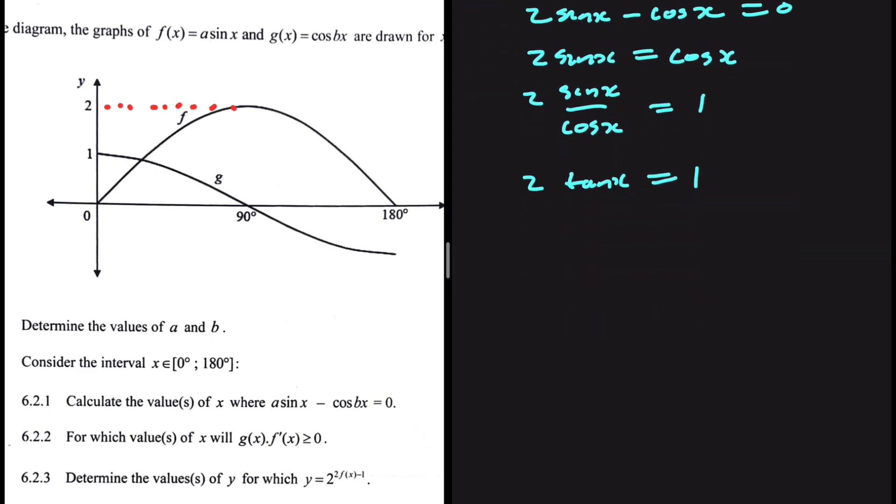You can see here that we're going somewhere. Tan x will equal 1 divided by 2. So we can say that x equals tan inverse of 1 divided by 2. The value of x is 26.57. And just like that, we've answered 6.2.1. Just a bit of algebraic manipulation.